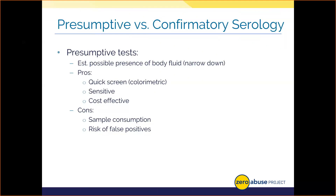Other concerns with presumptive tests are that they require consumption of some sample, so you need a sufficient amount to test with plenty left for DNA. You also can't run DNA on an item that's been tested with these chemicals — the chemical reaction renders the small sample unusable for other tests including DNA. Thus, an analyst's discretion comes into play again: do you test for a body fluid if it means less sample for a confirmatory test or DNA testing?